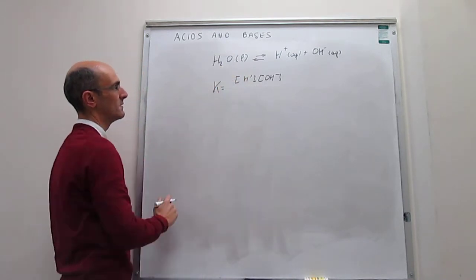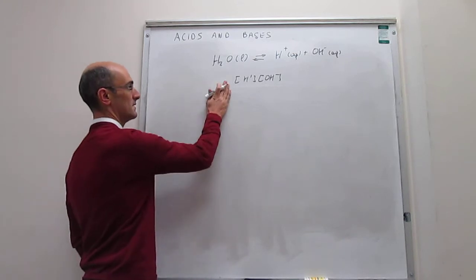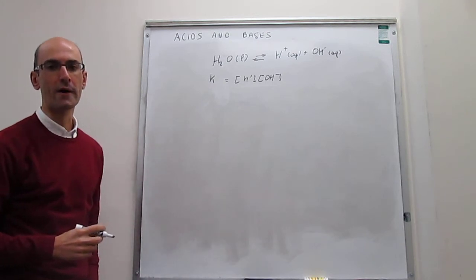And then you will have this divided over the activity of reagents, but notice that because you have a pure liquid, that activity is one. So this is actually the equilibrium constant for the autodissociation equilibrium of water.